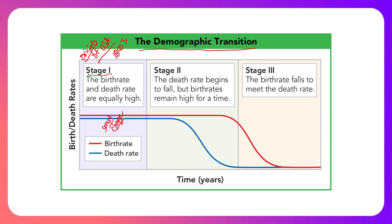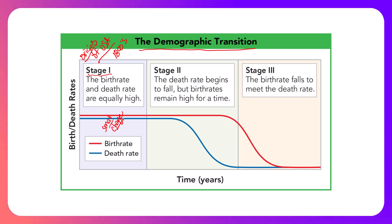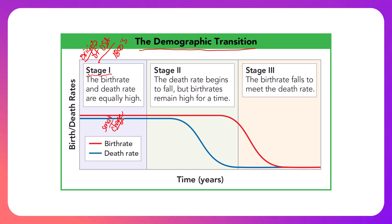Why might there be a high death rate in an early nation? A lack of infrastructure overall, sanitation, slow transit times, long distances between cities, lack of refrigeration, running water, and medicine. In the early United States, it was hard to get to a hospital if you were sick, hard to get food, and science hadn't caught up yet. Because of that, lots of people were dying. You had larger families because many people didn't make it to adulthood — you had large families because you knew you had to plan for losing some.